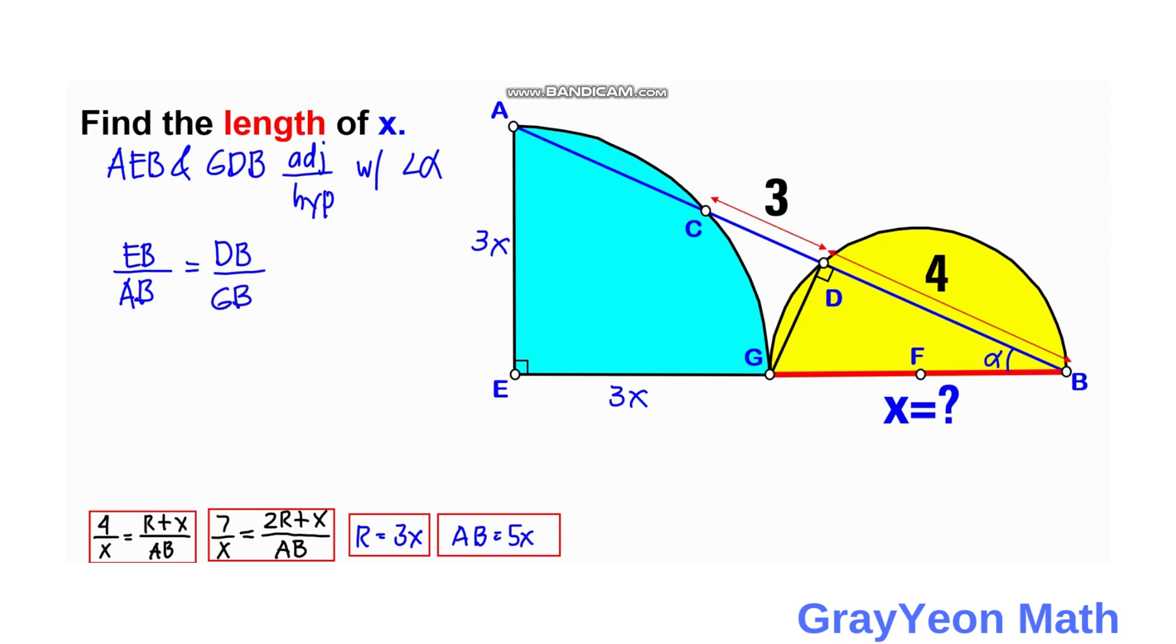We can actually replace or substitute EB with 4X. That is 3X plus X, if you inspect, that will be 4X. So AB is equal to 5X as we have gotten earlier. Here, equal to DB which is 4, and GB which is X.